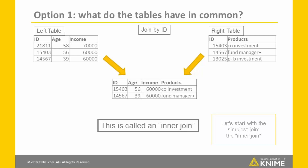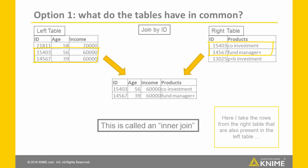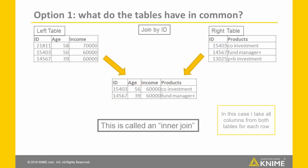Let's start with the simplest join of all, the inner join. The inner join only looks at the rows that are in common between the two tables. I take the rows from the right table that are also present in the left table and bring them together in the output table, taking all columns from both tables for each row.